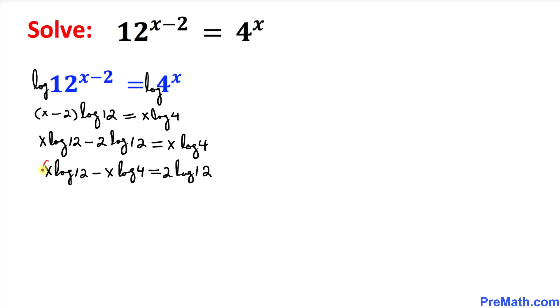And as we can see on the left hand side, this x is in common, we can factor this one out. So I can write x times log of 12 minus log of 4 equals...